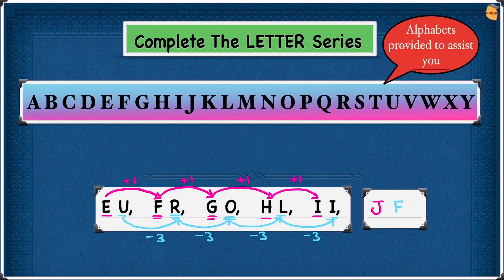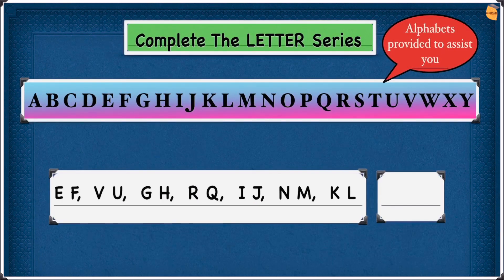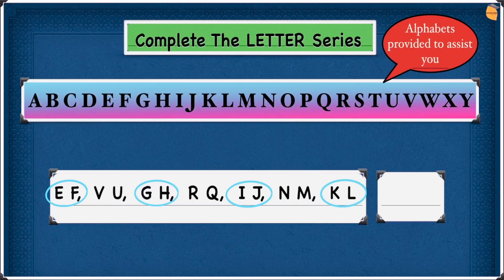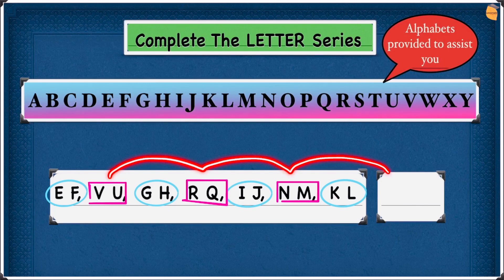Well done guys! Now let's move on to the next example. It's a bit trickier than the previous one because, as you can see, we have two sequences going on. We have one sequence: EF, GH, IJ and KL. And a separate sequence: VU, RQ and NM. We have to use this sequence to get the answer.